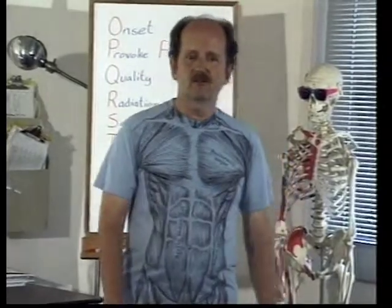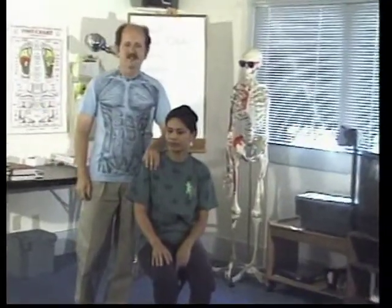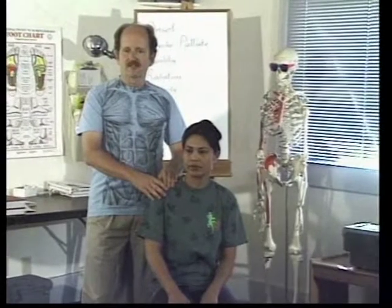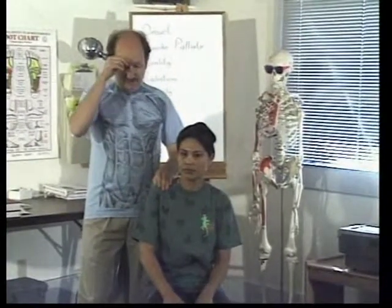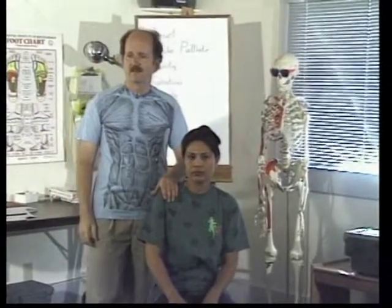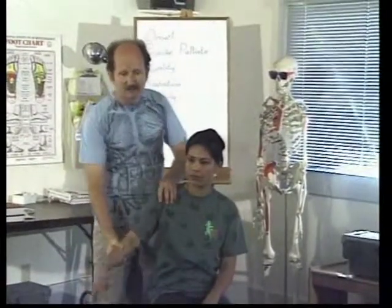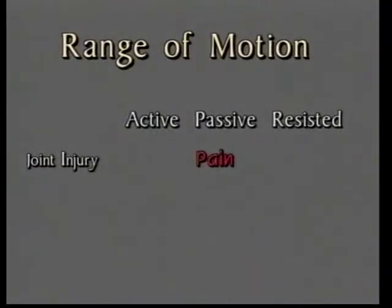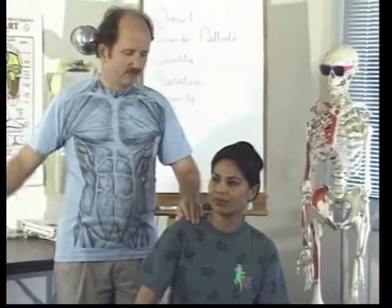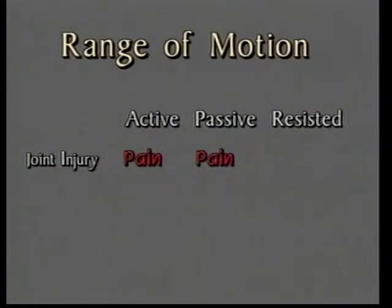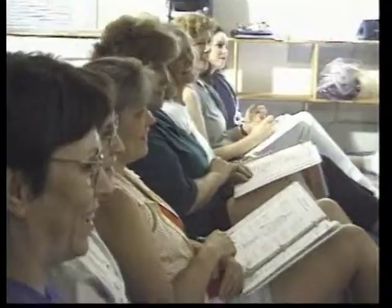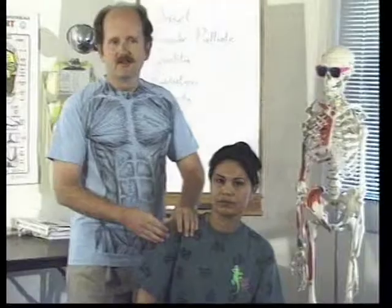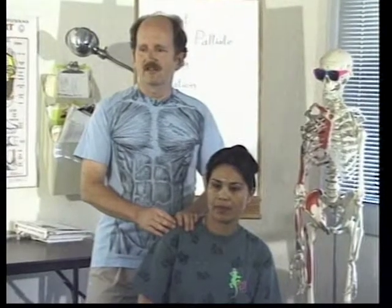To determine whether pain is in the muscle or in the joint, we can use three movement tests. Assuming the problem is in the joint capsule or ligaments: passive range of motion will cause pain, active range of motion will cause pain, but resisted isometric movement will not hurt — as long as the joint isn't moving. So with joint capsule or ligament problems, the only thing that won't hurt is resisted isometric movement.